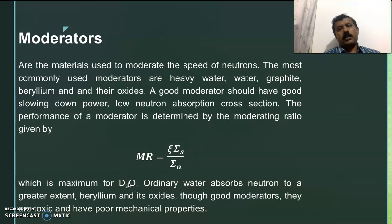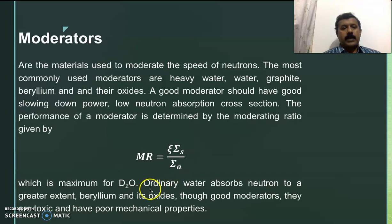Water can also be used as a moderator, but it has a higher absorption cross-section — it absorbs more neutrons, which reduces neutron economy. Beryllium and its oxides, even though they are very good moderators, are toxic and have poor mechanical properties. That is why they are less preferred compared to heavy water.